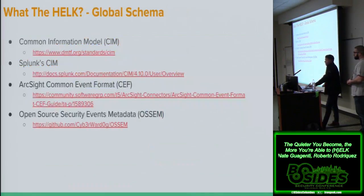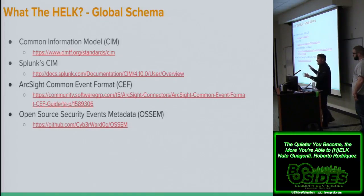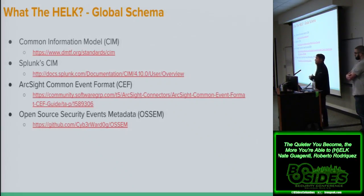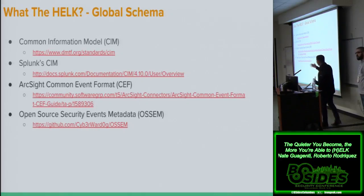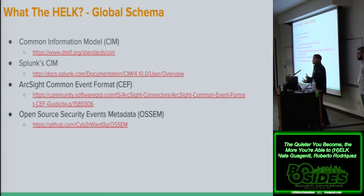Separating things in different indices in Elasticsearch 6.x allows greater shard distribution and compression. For global schema — Splunk has the Common Information Model with its own schema for field naming. I might disagree with a couple of things, but it makes sense from a data perspective. I started my own schema called OSSEM — Open Source Security Events Metadata — just to share how I name my fields. We're not 100% right, but at least it's going to make you start thinking about the documentation that needs to happen every time you create a field in your database.